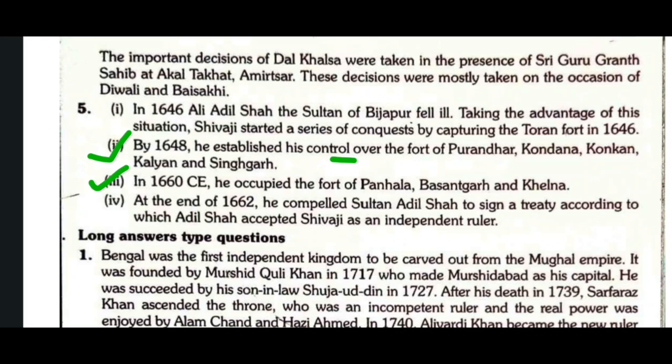In 1660 CE, he occupied the fort of Panhala, Vasantgad, and Khelna. At the end of 1662, he compelled Sultan Adil Shah to sign a treaty according to which Adil Shah accepted Shivaji as an independent ruler.